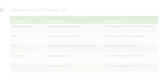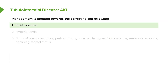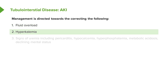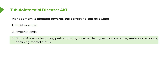Since this is acute, management is directed toward correcting fluid overload, hyperkalemia, and signs of uremia. The objective is to take care of hypertension, hyperkalemia, and uremic signs — including hypocalcemia, secondary hyperparathyroidism, hyperphosphatemia, anemia, metabolic acidosis, and declining mental status.